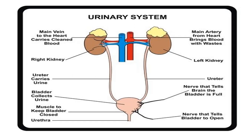In this diagram you can see the two kidneys — right and left kidney. From each kidney there are two passages known as the ureters which carry the urine. After carrying the urine from the kidneys, the urine is temporarily stored in the urinary bladder, and from the urinary bladder the urine exits through the urethra.